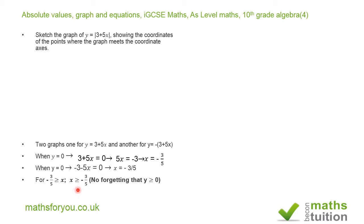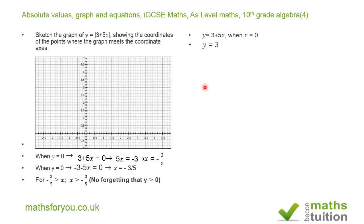For the first straight line graph, we have x values greater than or equal to minus 3 over 5. All our y values will be greater than or equal to 0, so the graph does not go below the x-axis. We also need to find where the graph touches the y-axis. When x is 0, y is equal to 3 plus 5 times 0, which gives y equal to 3. So the first graph, y equals 3 plus 5x, touches the x-axis at the point minus 0.6.